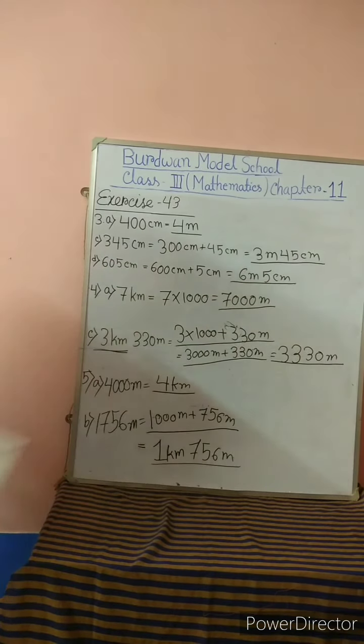1756 meters can be written as 1000 meters plus 756 meters because adding these two gives the original number. 1000 meters equals 1 kilometer, so we get 1 kilometer 756 meters. The rest of the exercise you will try to practice by yourself. If you are facing any problem, ask me. Thank you.